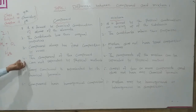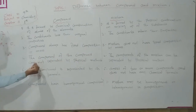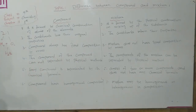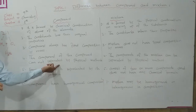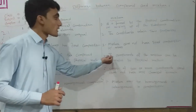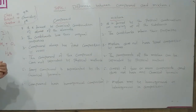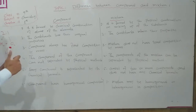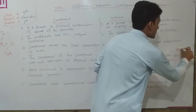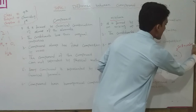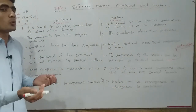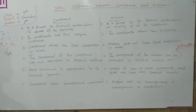Number 4: The components of the compound cannot be separated by physical method. The components of the compound cannot be separated by physical methods such as filtration, distillation, etc. The components of the mixture can be separated by physical method. For example, soil and water: soil plus water are mixed together, and by filtration the soil is completely separated from the water.